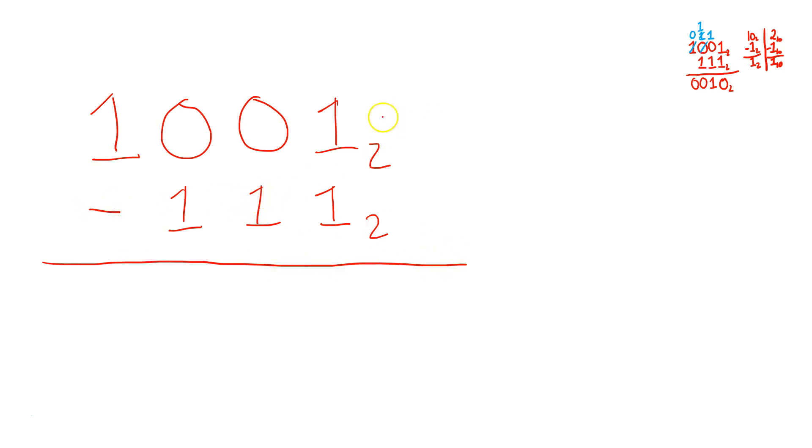So to do this, first of all, make the following observation. Where it says 1 minus 1 in binary, that's 0 in binary. So you put 0 with a 2 over here, for example.